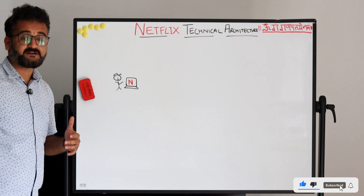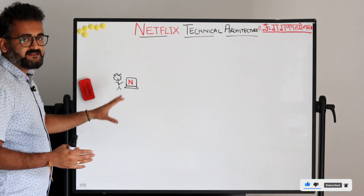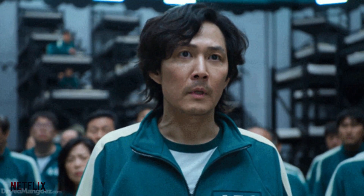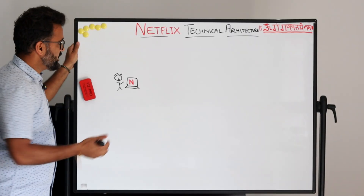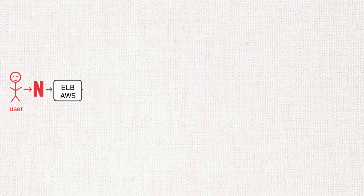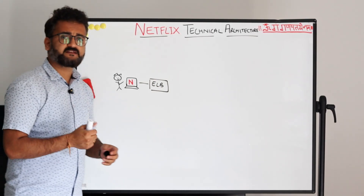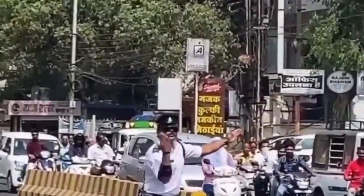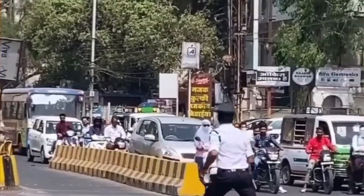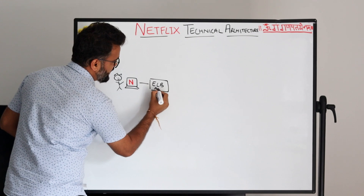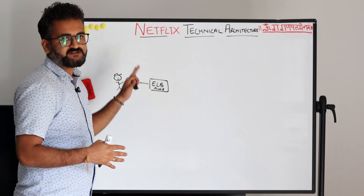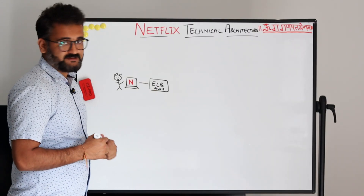When a user tries searching for Squid Games or their favorite Netflix series, the first thing that happens is this request goes to an Elastic Load Balancer. With so many users and so many requests to process, it acts like a traffic inspector sitting at the center of the road, diverting traffic. Netflix's cloud-based architecture is predominantly on AWS, so AWS Elastic Load Balancer is used for processing the incoming requests.